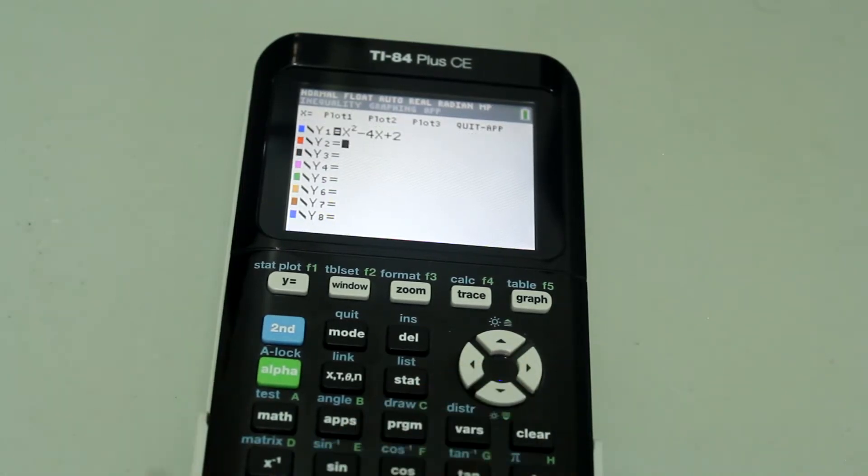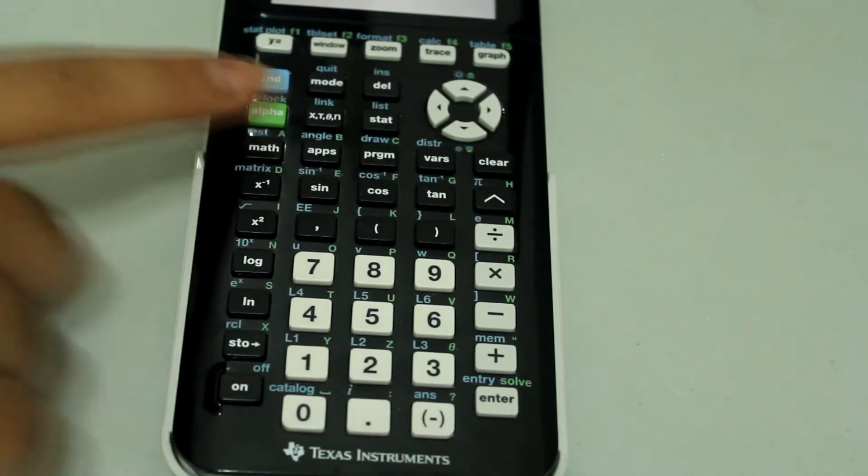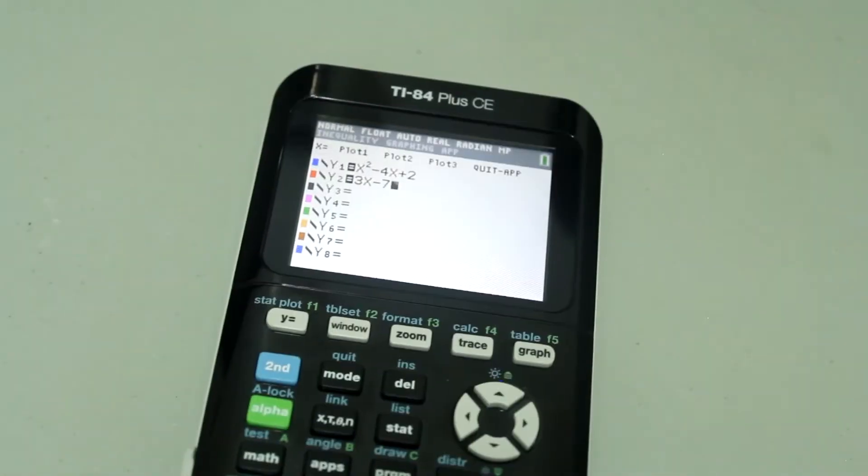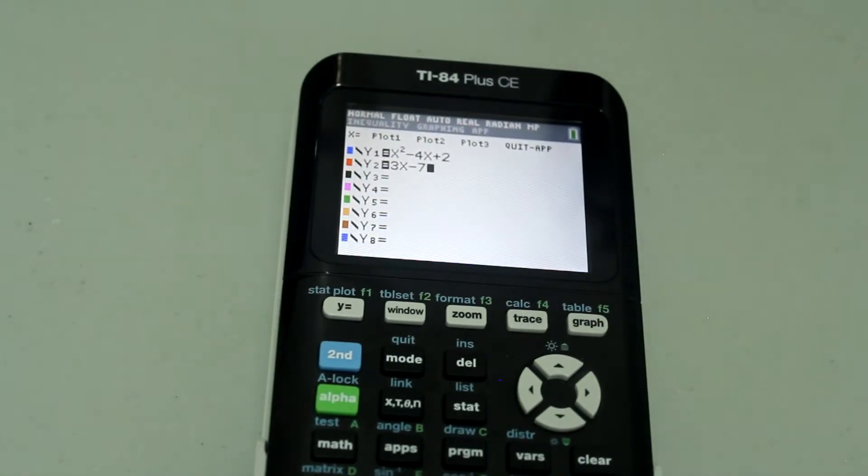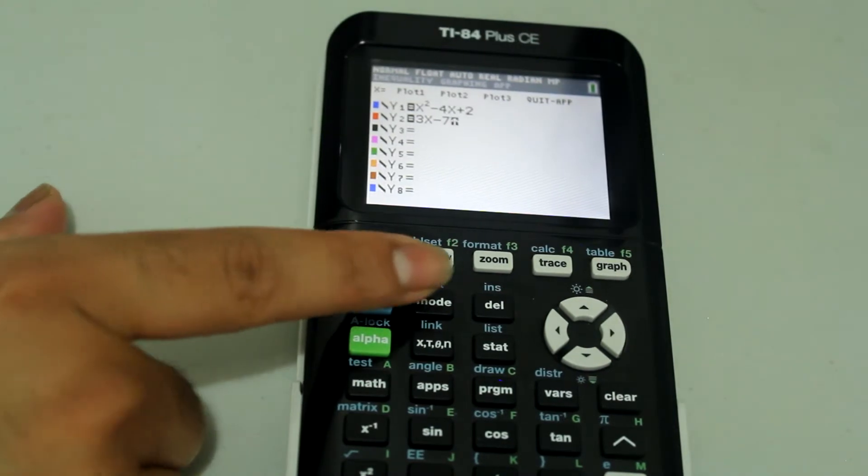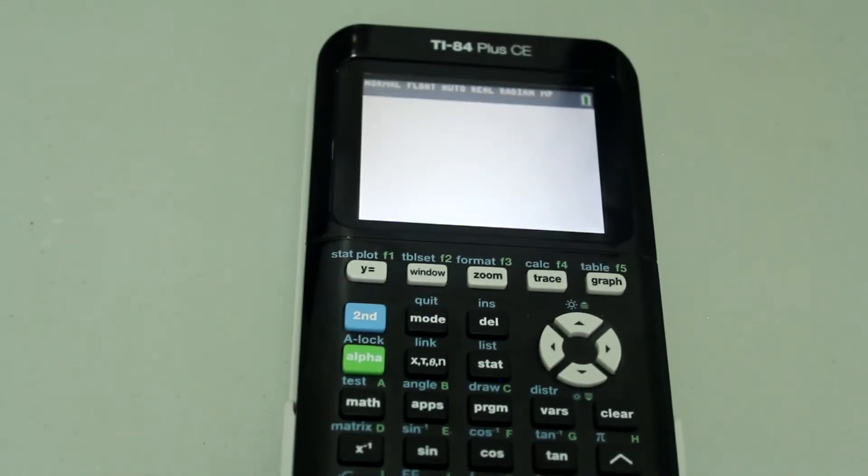Then arrow down and Y2 is equal to 3x - 7. Now press 2nd MODE to quit the Y= menu and return to the home screen.